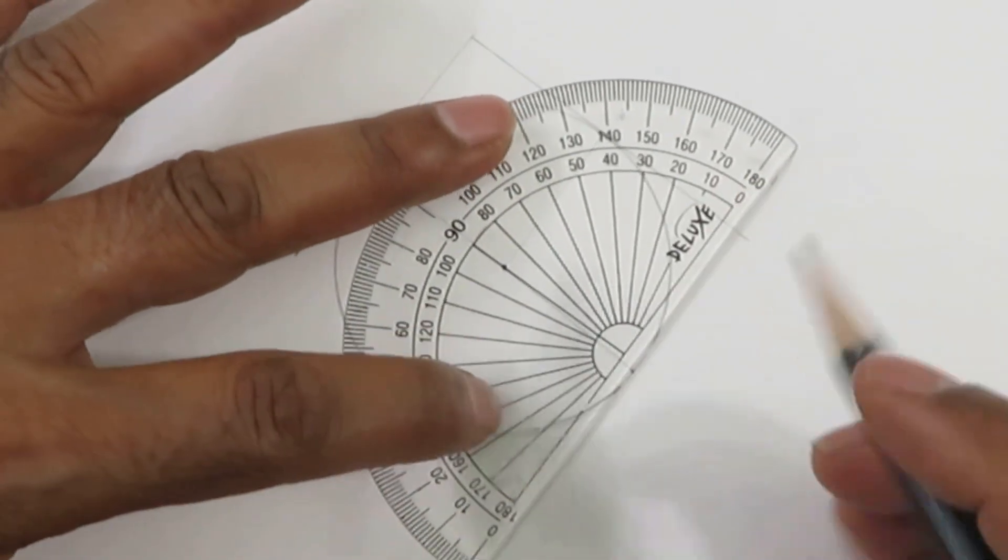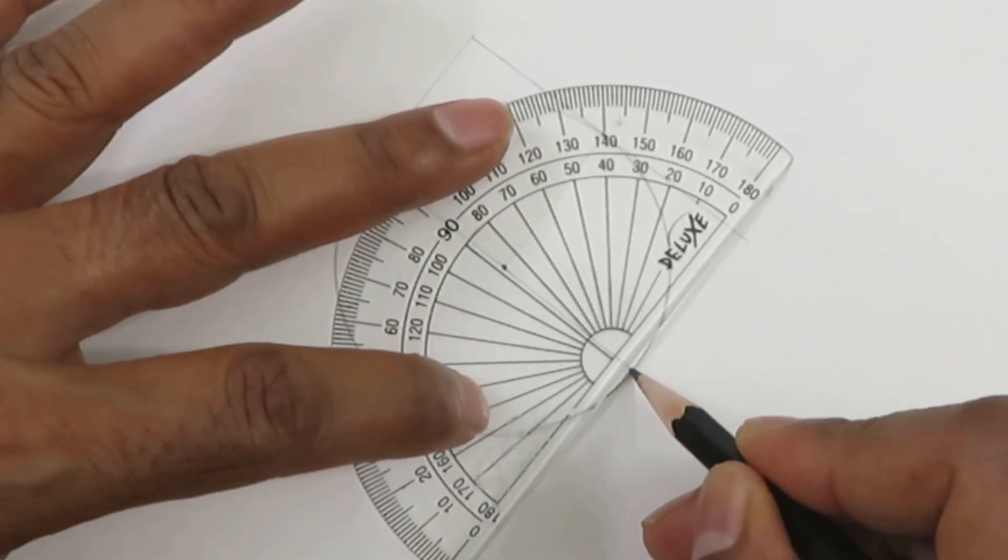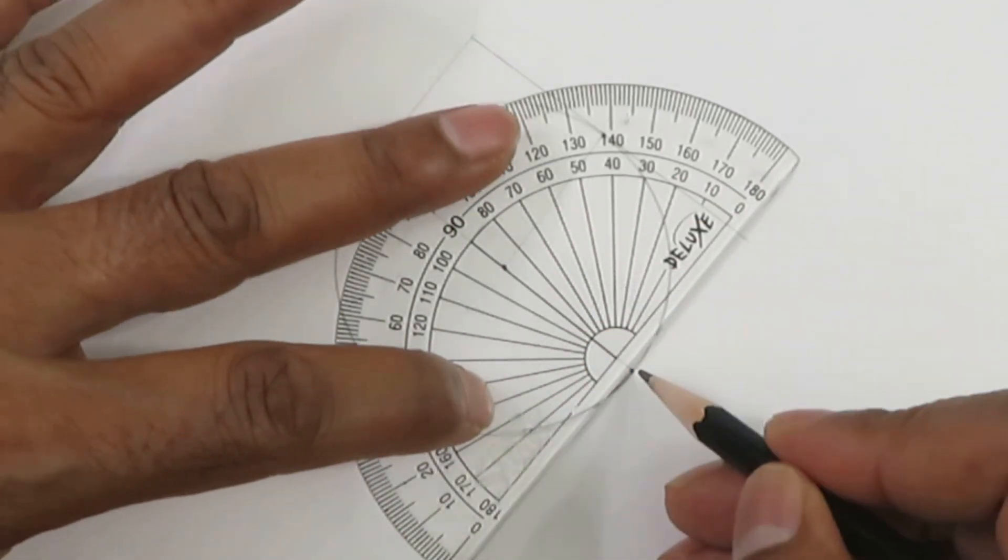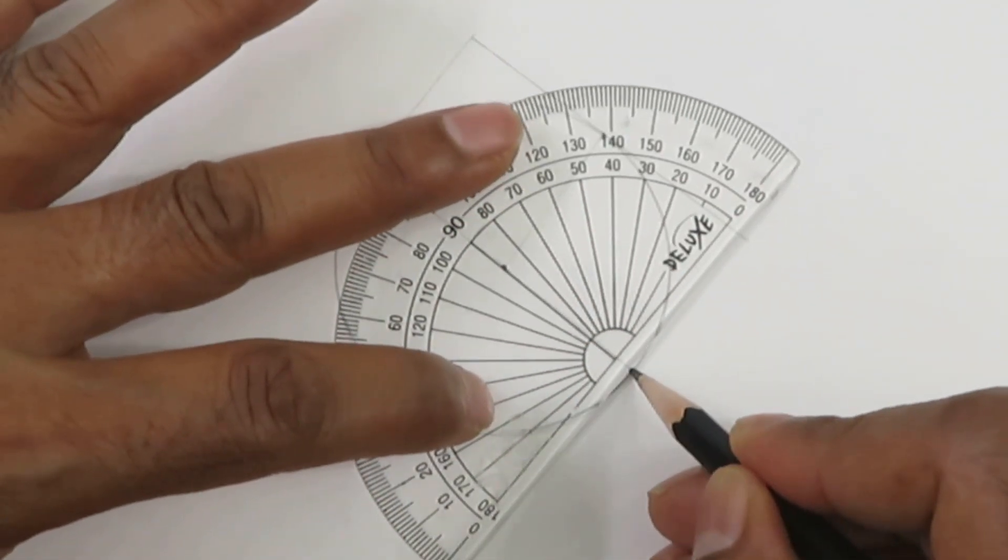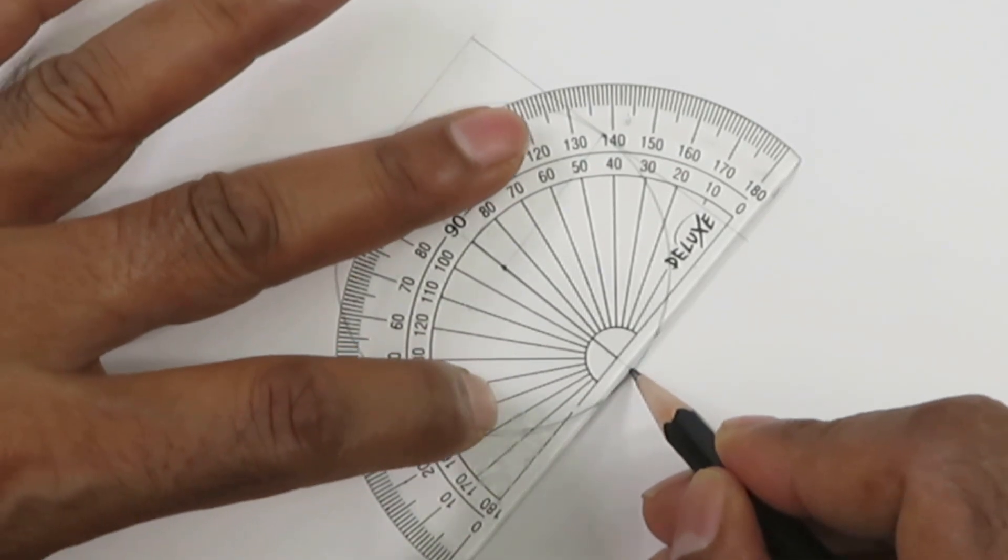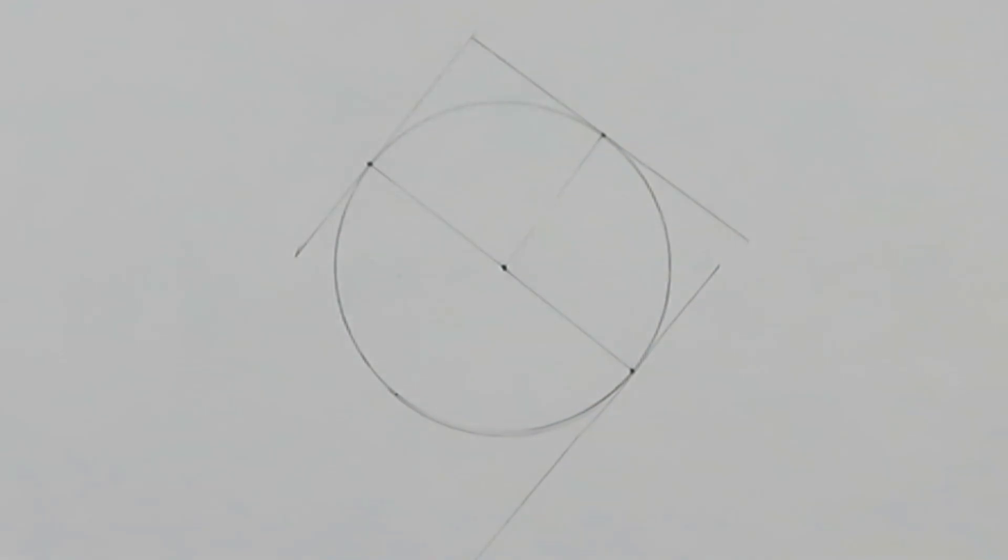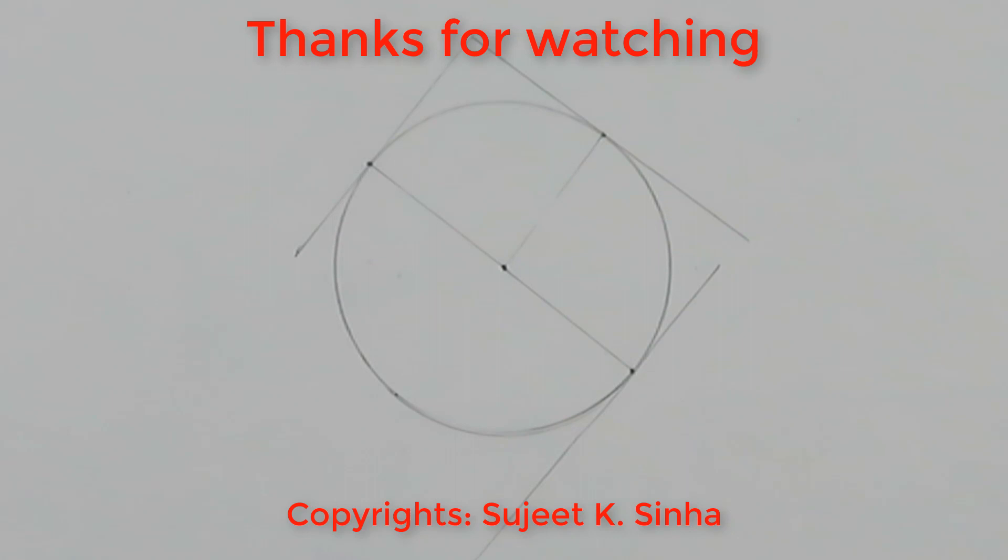All you have to do is use the protractor and align the 90-degree line along the radius, and you can draw the tangent. This is a very easy method to draw a tangent at any point on a circle.